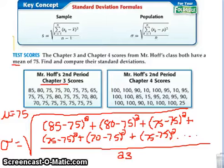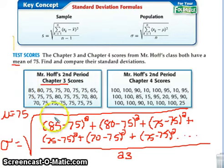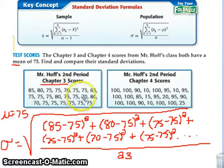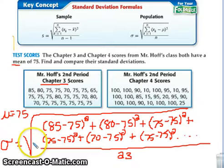Yesterday we talked about how to find the standard deviation the old school style. When finding it without technology, you have to use two formulas. For these chapter 3 scores, you would take each score, subtract the mean, square each result, add every single one of those squares together, divide by the number of terms, and then take the square root at the end. It is a significant process.